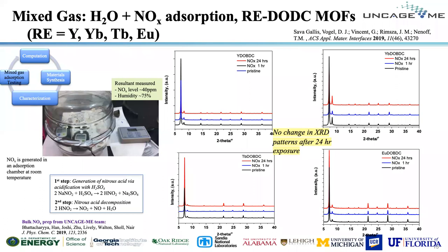We use X-ray crystallography to understand how stable these materials are. For the yttrium DOBDC, we compare a pristine sample, NOx exposure after one hour, and NOx exposure after 24 hours. NOx — nitrous oxide — is an acid gas we generated with water in the lab, creating a mixed gas of NO₂ and humidity. Under these harsh conditions, the metal organic framework does not break down. The consistency of the peaks and their locations across all the X-ray patterns shows stability, meaning the acid gas is not breaking apart the ligands from the framework.